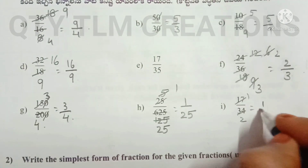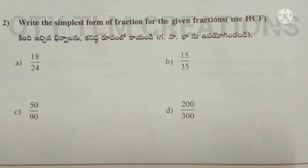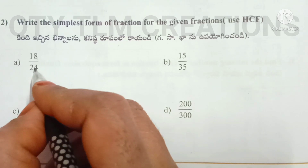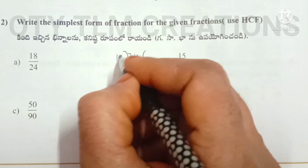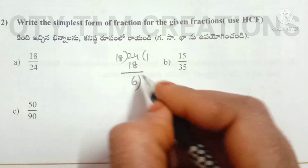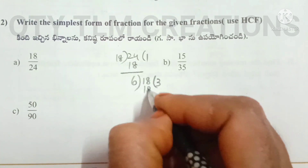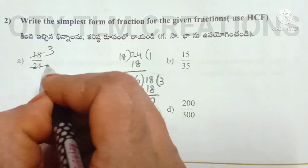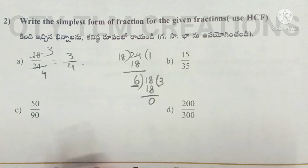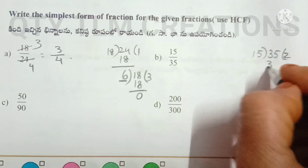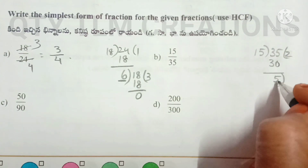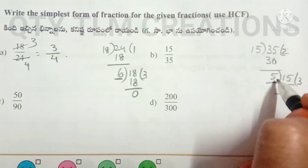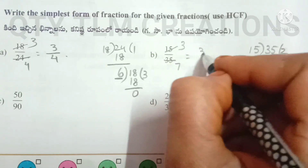Next question: write the simplest form of a fraction using HCF. For 18/24: HCF of 18 and 24 — divide 24 by 18, remainder 6; divide 18 by 6, remainder 0 — so HCF is 6. Dividing both by 6: 6×3=18 and 6×4=24, giving 3/4. For 15/35: HCF — 15 goes into 35 with remainder 5; 5×3=15, remainder 0 — so HCF is 5. Dividing: 5×3=15 and 5×7=35, giving 3/7.